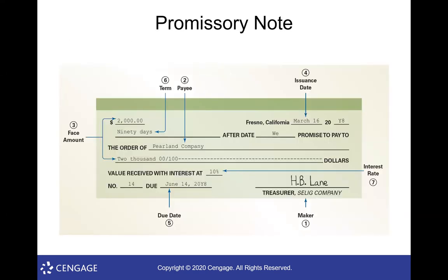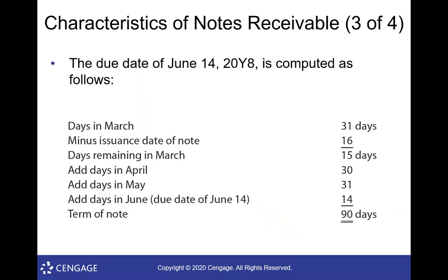For the March 16th example with a 90-day note: 31 days in March minus the issue date of 16 gives you the days remaining in March. Then add days in April, May, and June until you reach 90. It's not crazy hard, but breaking it down into those pieces makes it more manageable.